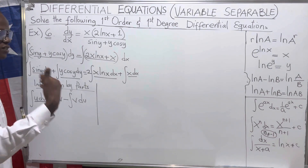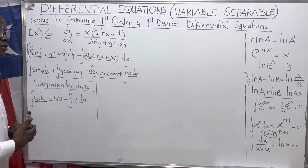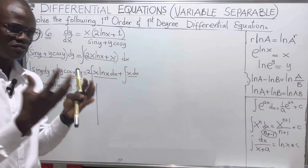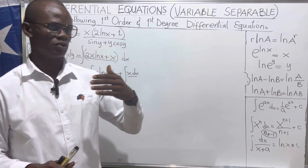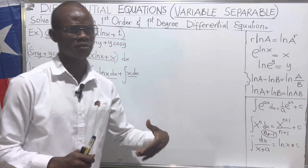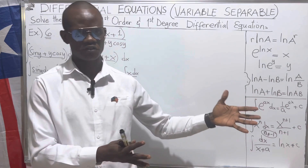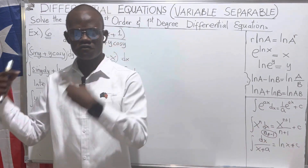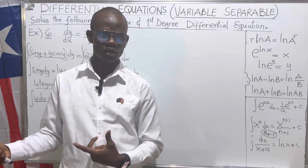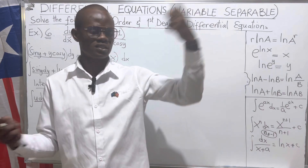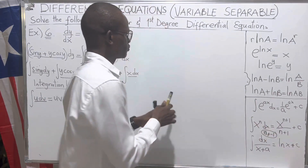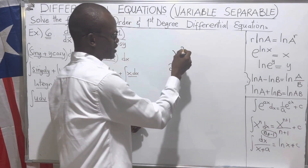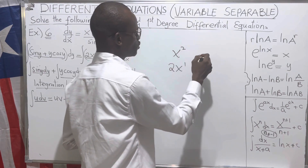Sometimes when you integrate an expression it doesn't change — consider that as your dv. The key idea is that u should be something that reduces when differentiated. For example, when you have a variable and a trigonometric function, let u be the variable, because differentiating a variable reduces the power, while integrating it increases the power.